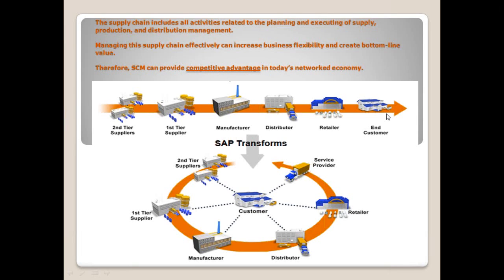If you take any global companies or bigger companies, there are a lot of plants, a lot of distribution centers, a lot of vendors, and a lot of customers. To effectively integrate all those things — effectively integrate your entire supply chain — you need effective software. That software is provided by SAP, Oracle, Ramkey, i2, and Microsoft. SAP is the market leader with 70% market share.